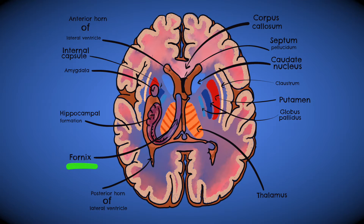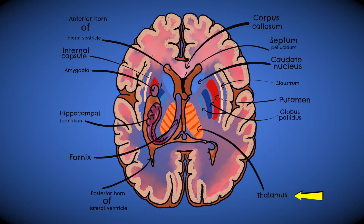The limbic system regulates some of the brain's most important features and is comprised of many structures seen here. These include the amygdala, the hippocampus, the thalamus and hypothalamus, the basal ganglia, and the cingulate gyrus.